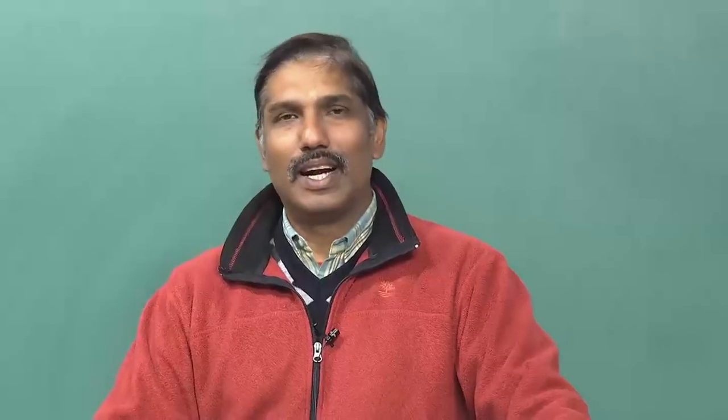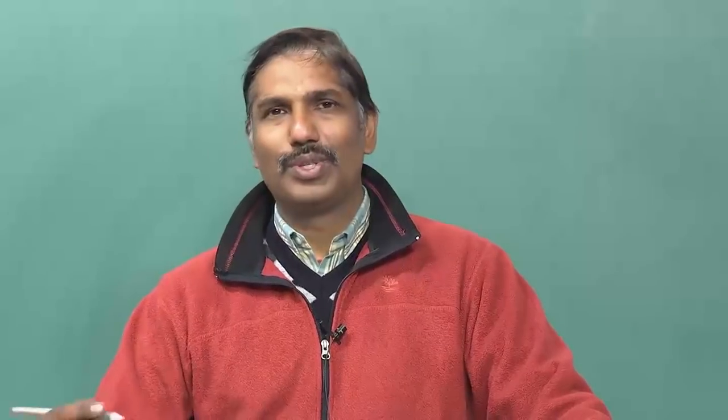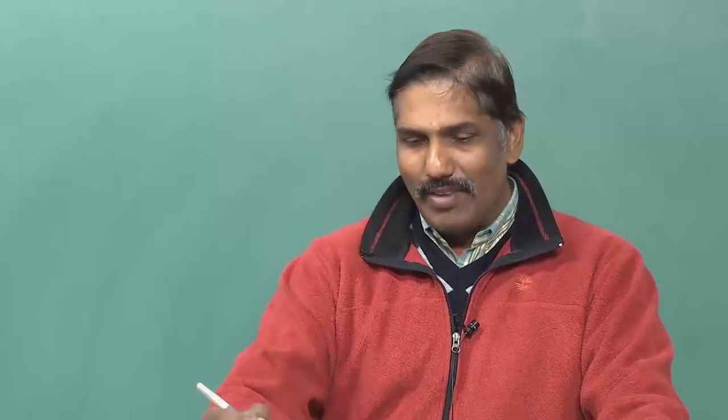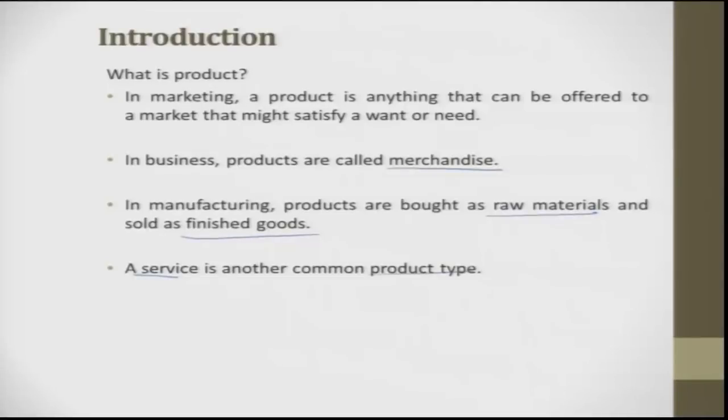Today Ola and Uber started with cars and now they have gone to auto rickshaws, and today they have come down to bicycles. There is a possibility of evolution, and when this evolution happens, they always try to make the customer happy plus put in economics. A product is something you make for a customer, make him happy, where economics also plays a role. If economics and customer satisfaction are not there, we do not develop products.